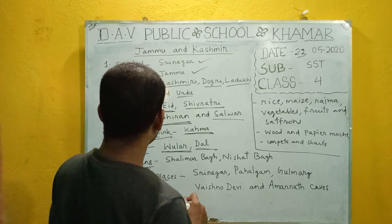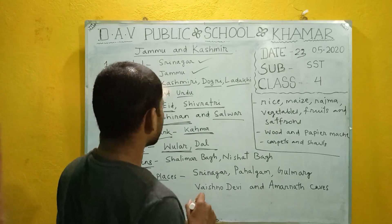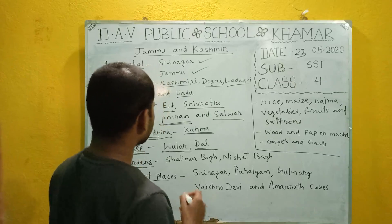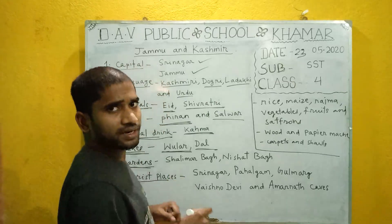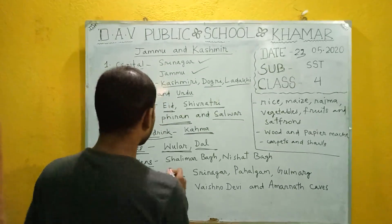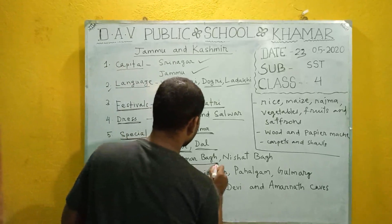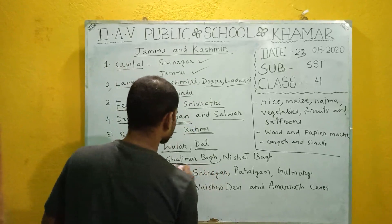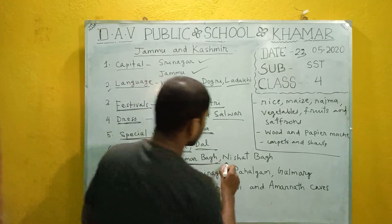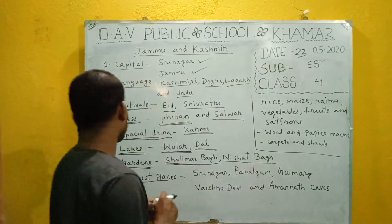In Jammu and Kashmir there are two beautiful gardens that were built by the great Mughal emperor Jahangir. The names of these beautiful gardens are Shalimar Bagh and Nishat Bagh.